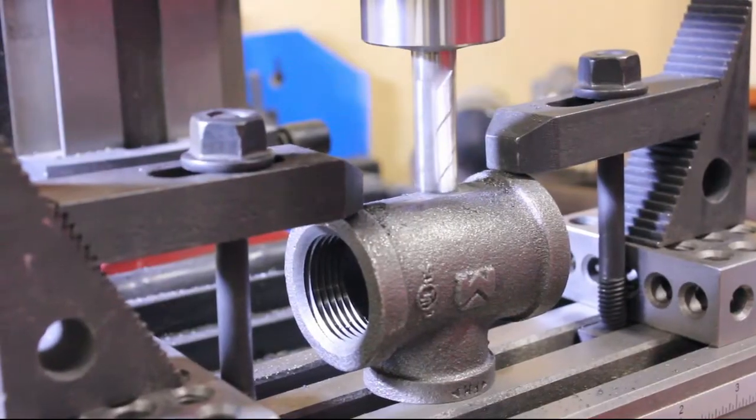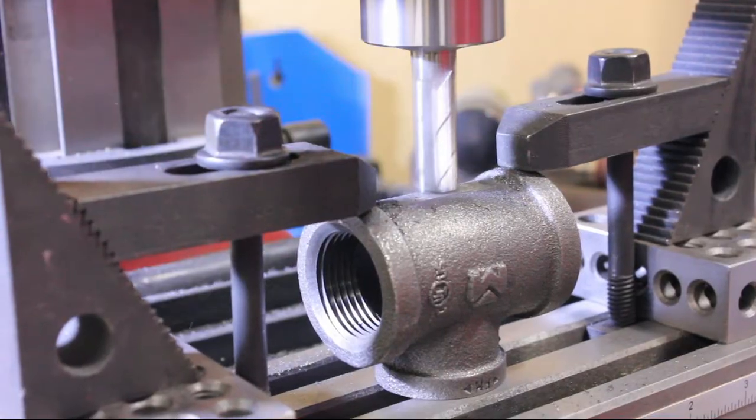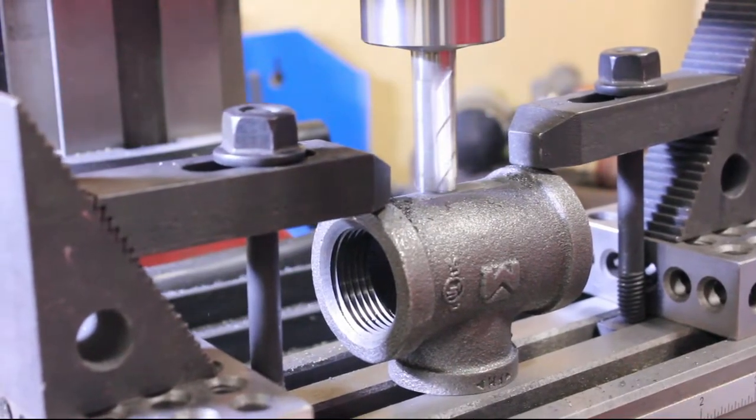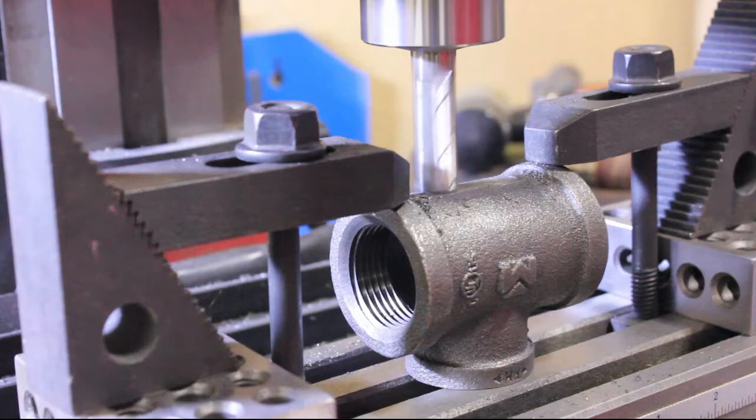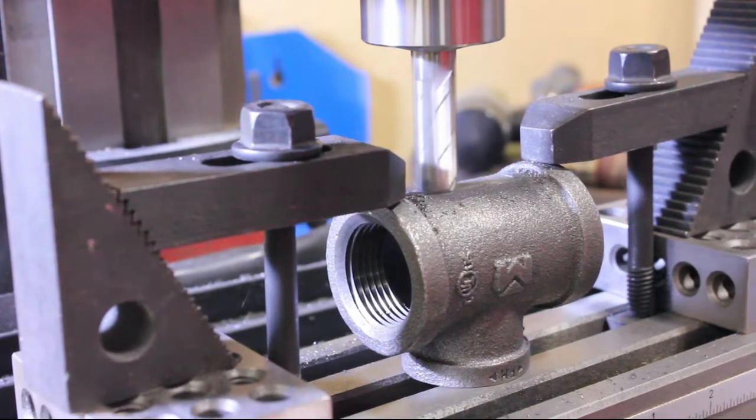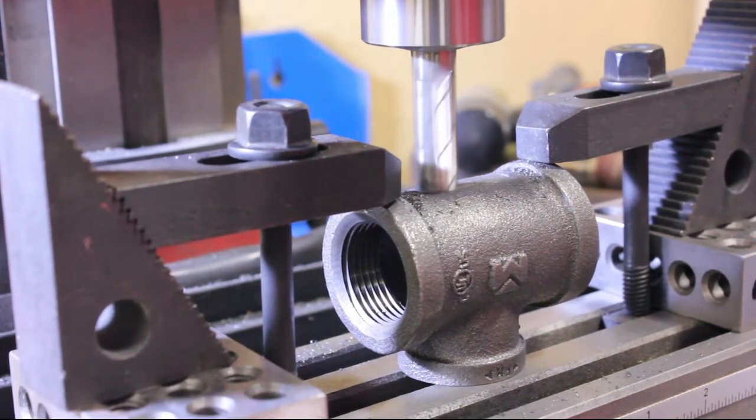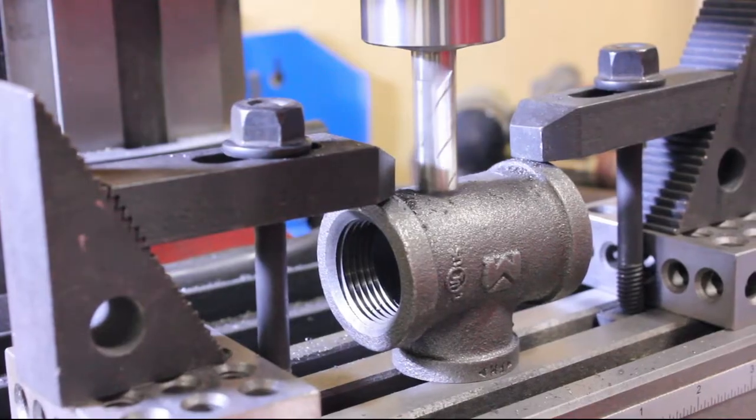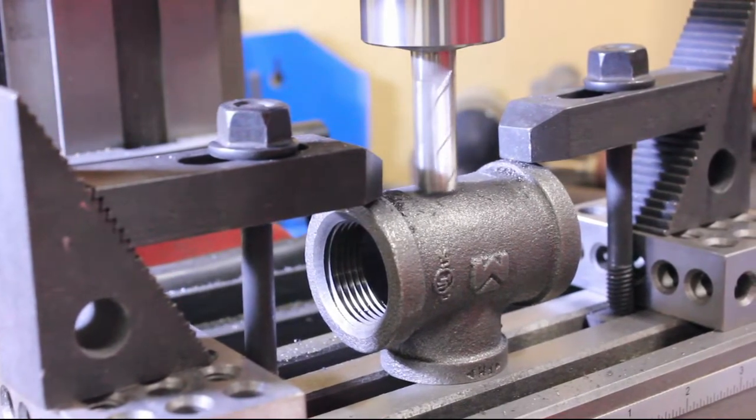So let's get this build started. Step one is going to be to put a hole in the top of the center of the tee. What you see me doing here is milling a flat section on top of the tee. You can do this with a mill, with a grinder, with a file, but all this does is help you drill the hole nice and straight.